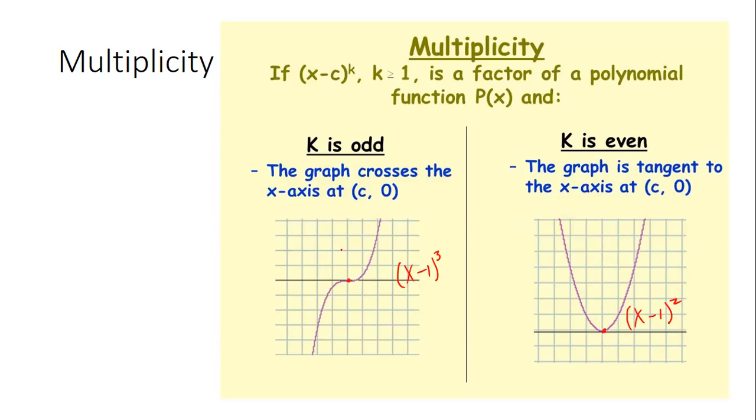So normally it just crosses straight through. That's what we've been seeing, right? Just curving straight through. Well, there's no longer just curving straight through. You now have other ways that it can behave around the x-intercept.